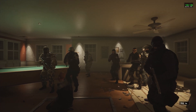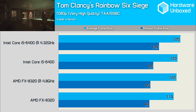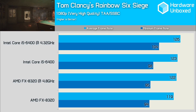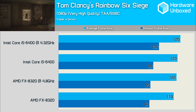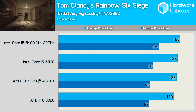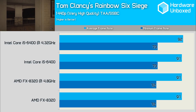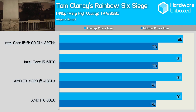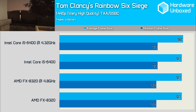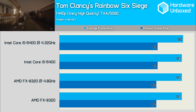Like Mad Max and Battlefield 4, Rainbow Six Siege is another game that's primarily GPU-dependent. As a result, all configurations were able to get the most out of the Radeon R9 390. Moving to 1440p removes virtually all performance margins, and we see just one FPS separating the fastest configuration from the slowest.